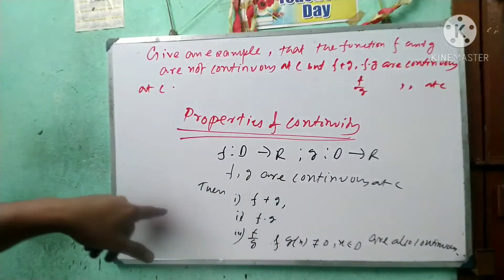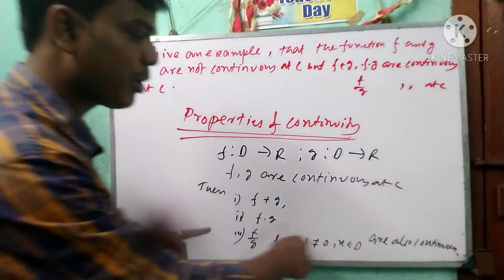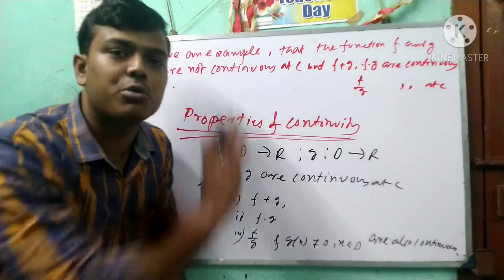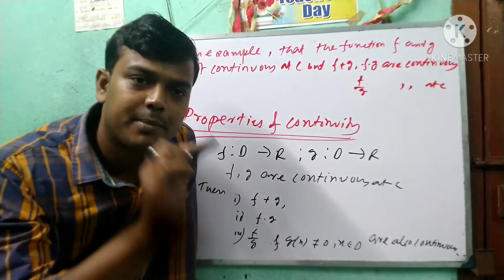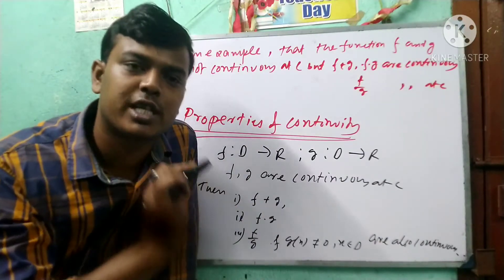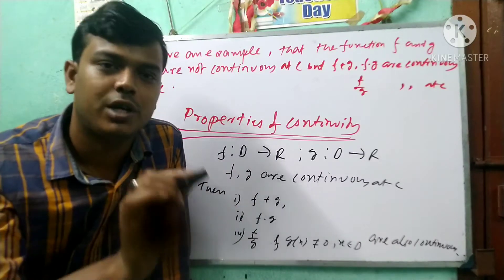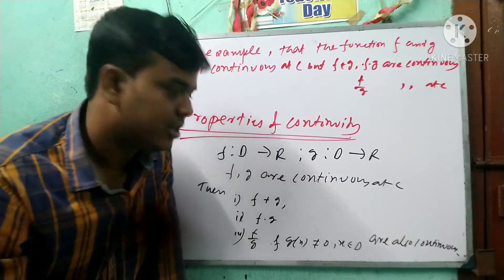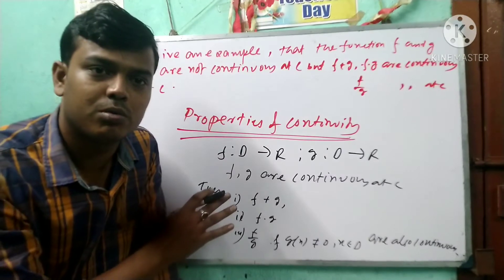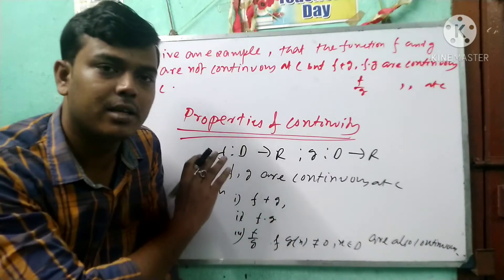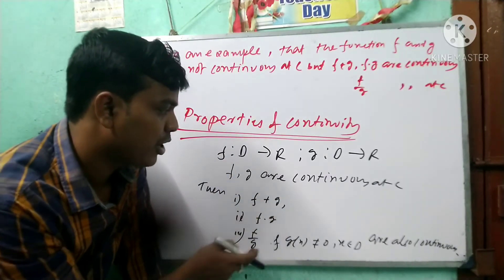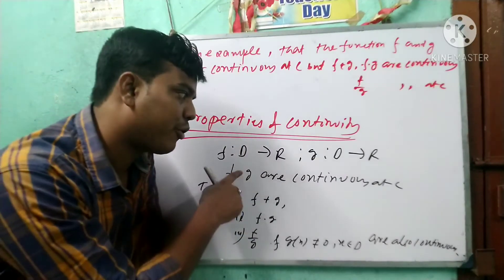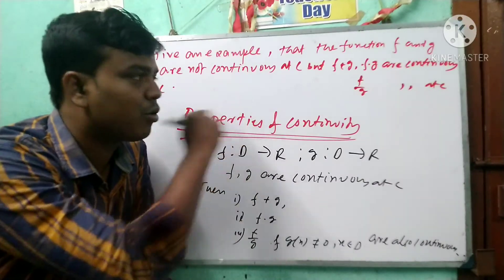However, the converse statement is not true. This is the first question and the second question regarding the converse statement. The converse statement: if the other functions are continuous, then this combined result is true — let us examine whether that holds.